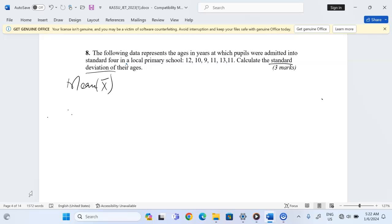If the marks are x, the mean of x is abbreviated this way. We're going to add all the ages: 12, 10, 9, 11, 13, and 11. These are for six pupils, so we divide by six after adding.